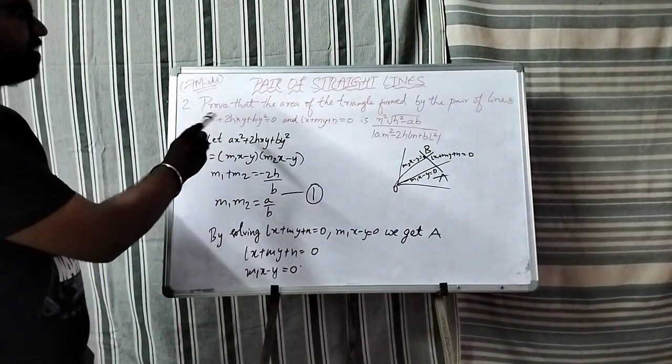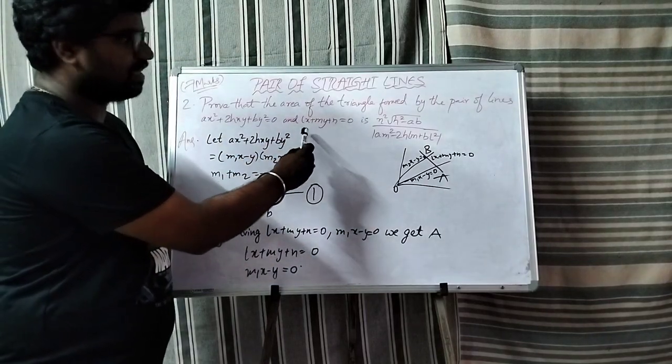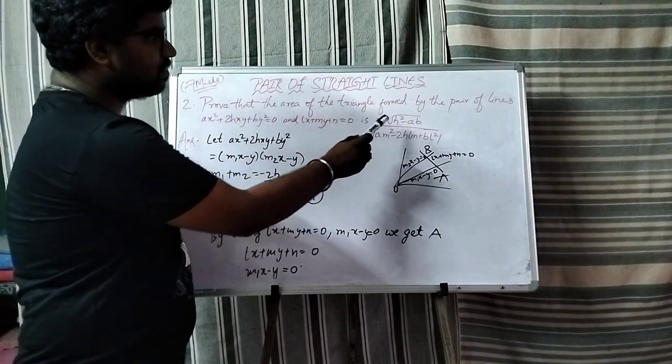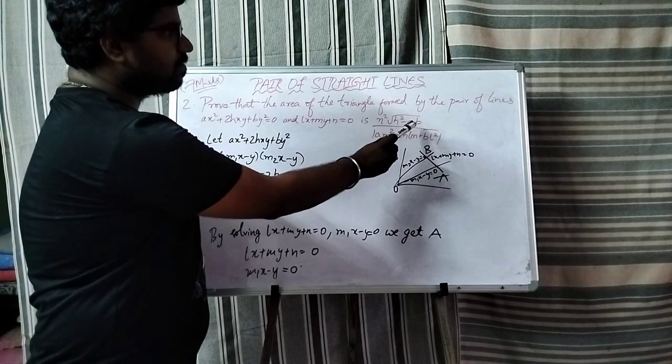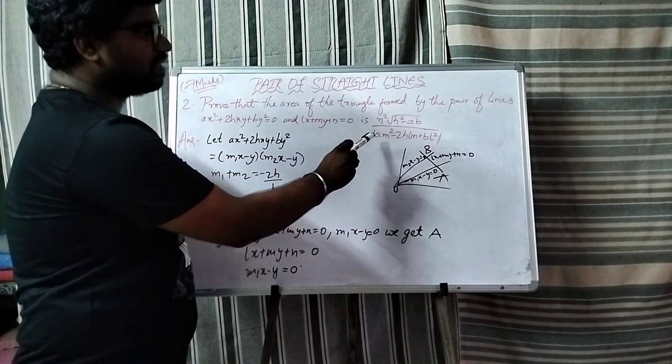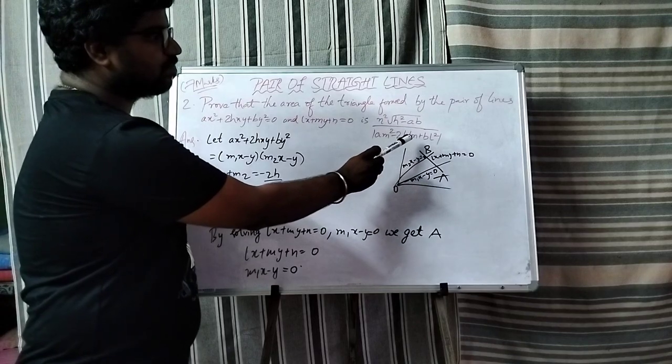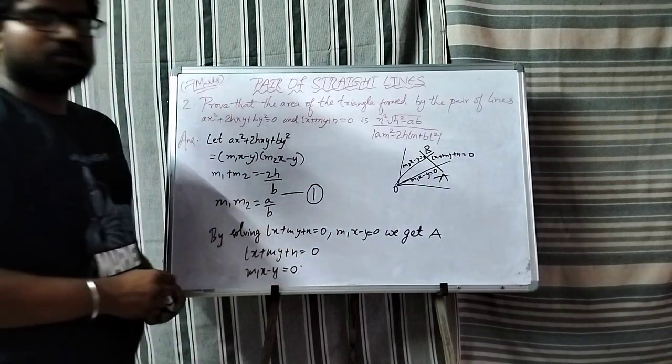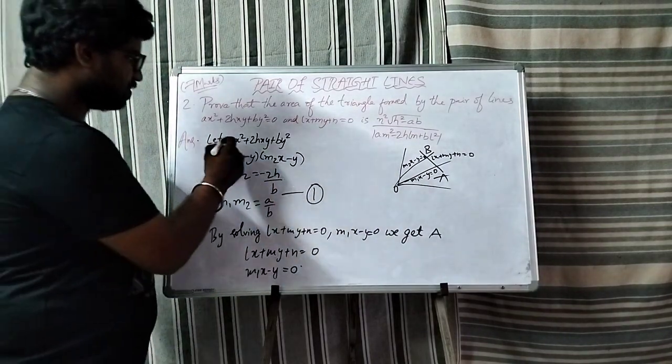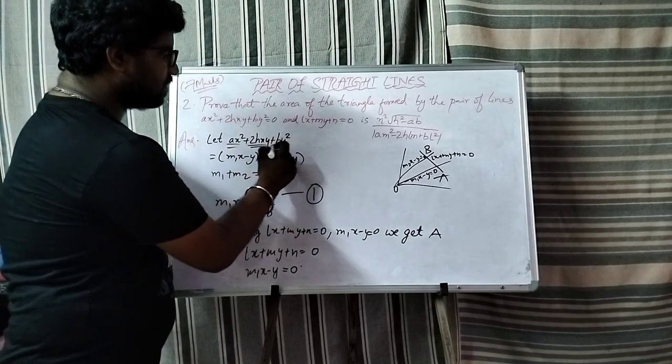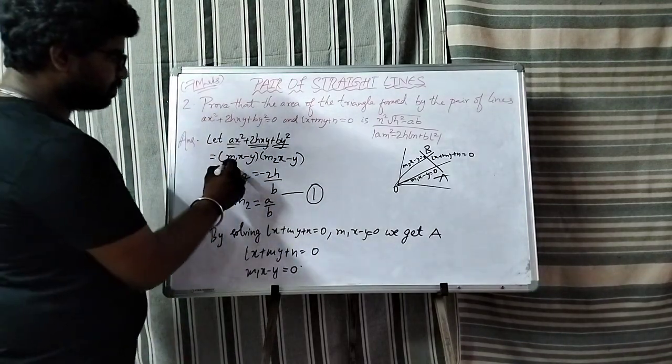that is the first straight line, and second straight line is lx plus my plus n equal to 0, is n square into root over h square minus ab divided by modulus of am square minus 2hlm plus bl square. The first pair of straight lines ax square plus 2hxy plus by square, this contains the product